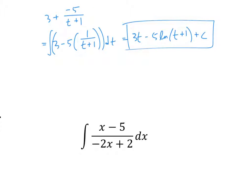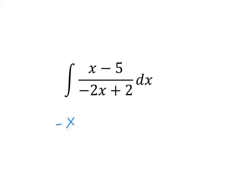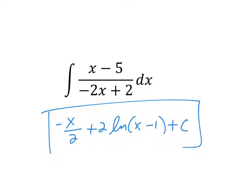Let me know when you're done with this one. The answer is negative X over 2 plus 2 natural log of X minus 1, plus C. So that's long division, and your homework is going to have some where long division is added with arc sine and arc tangent, which is okay — you can do it.